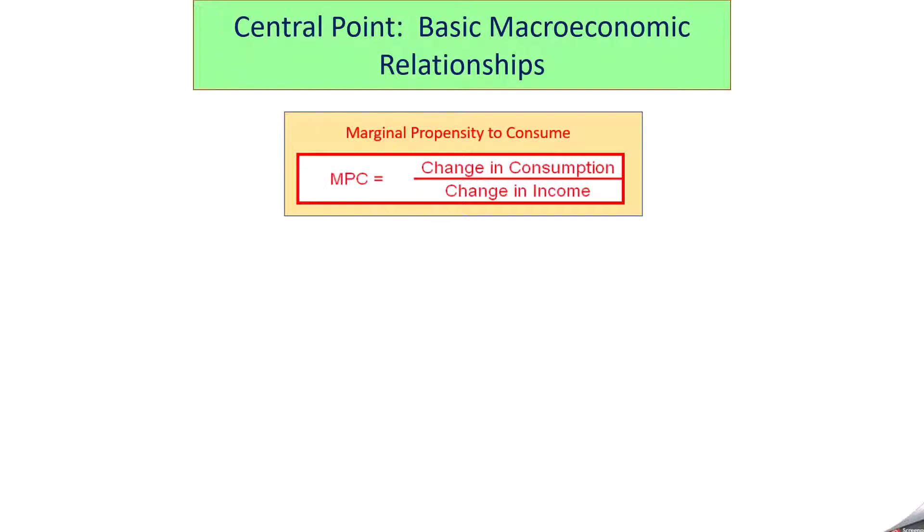We've learned already that the word marginal means additional. The word propensity means likelihood. So what this is asking is, if you get additional income, how likely are you to consume it or spend it?